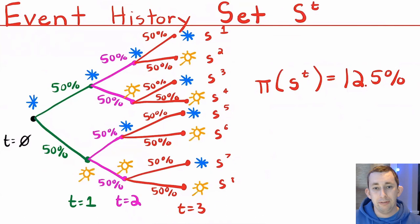Now that Bill and Dave both live forever, it's important to talk about what's called the event history set, or big S superscript T. So I've written out just a little example based on a three period example where we can be sunny or snowy in a given day. So what I want you to focus on is that say we're at time equals two, and it's sunny today. So we're at this part right here.